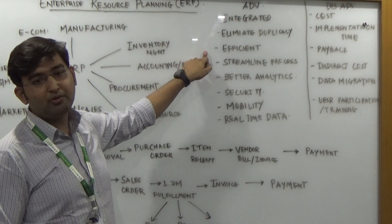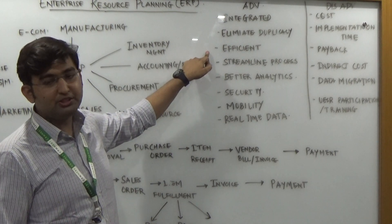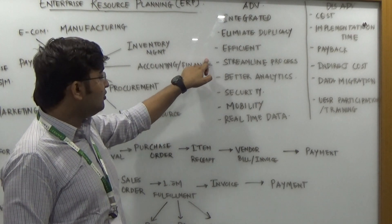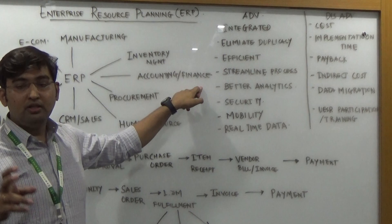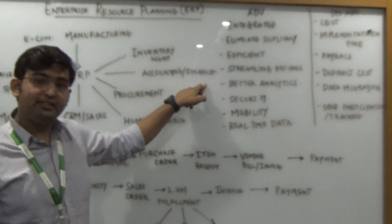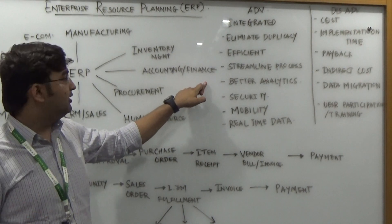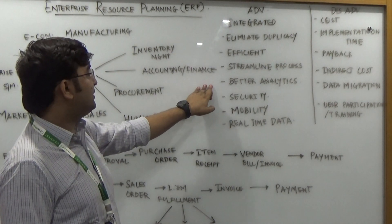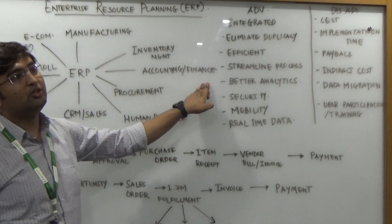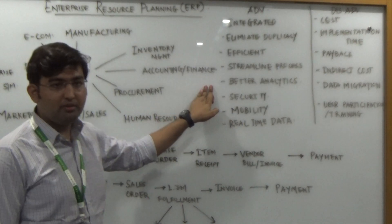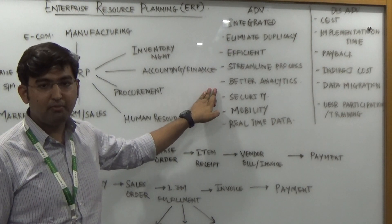Third advantage: it is very efficient — you don't have to wait the whole day for a single report; it's point and click, the report is generated. Fourth is streamlined process — every process is streamlined; as soon as a single process happens, the next dependent process executes and data is updated. Fifth is better analytics — better decision making. Based on your sales and procurement reports, you can take better decisions on what needs to be done next.